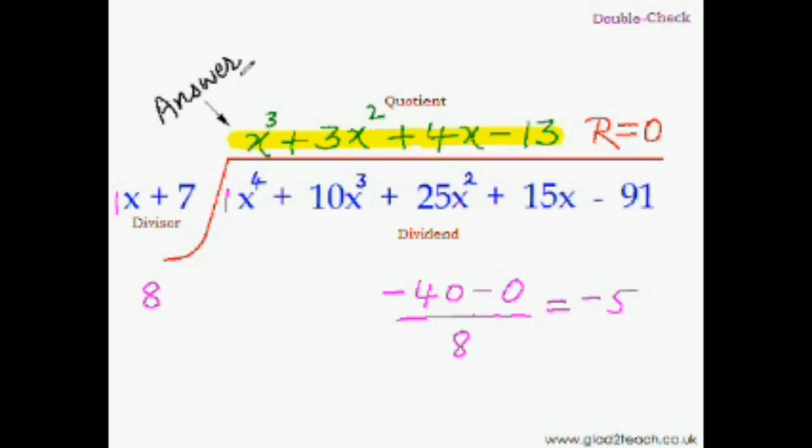So let's find out: 1 plus 3 is 4, 4 plus 4 is 8, and 8 minus 13 is minus 5. That means our answer is absolutely correct!